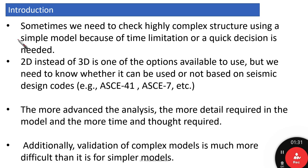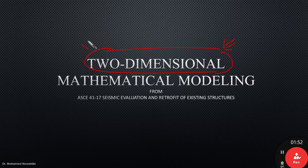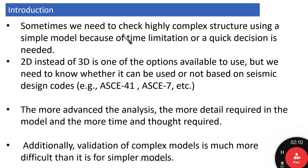The main reason for this video is to understand that we have options. Making a two-dimensional mathematical model can sometimes save us time and be simpler and easier to implement. We need to understand when and when not to use it, and what the code says about 2D modeling, especially when dealing with highly complex structures under time limitations or when a quick decision is needed.